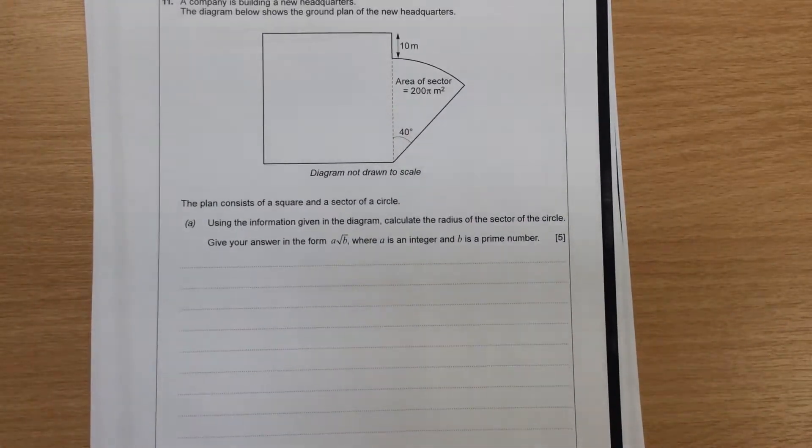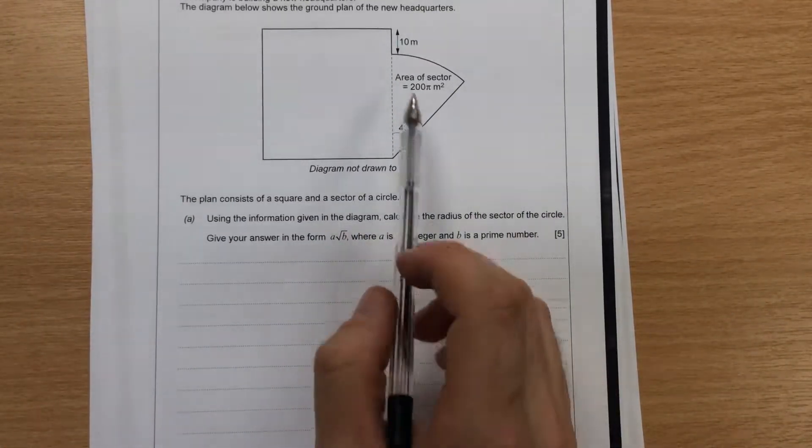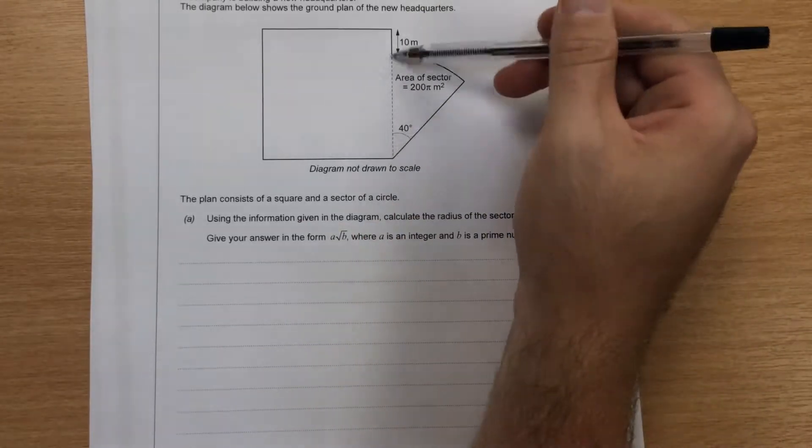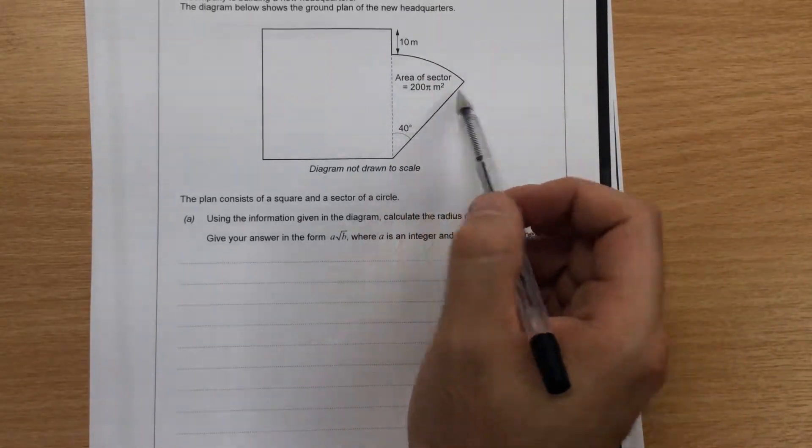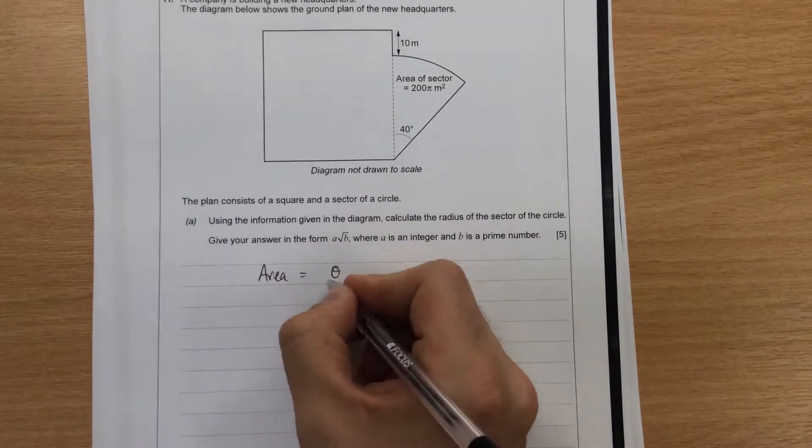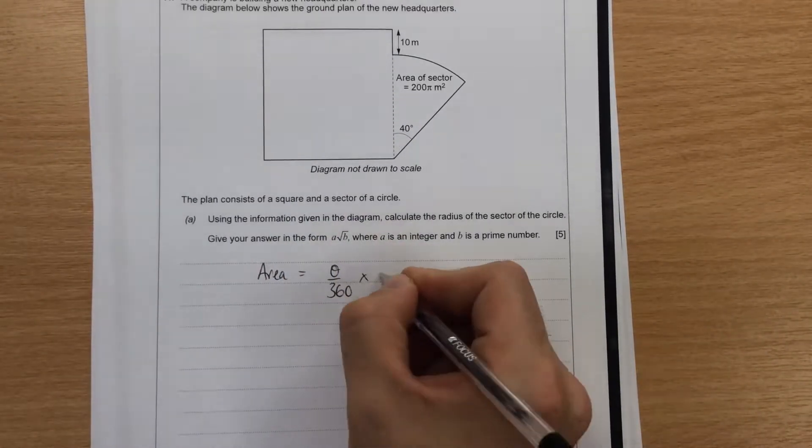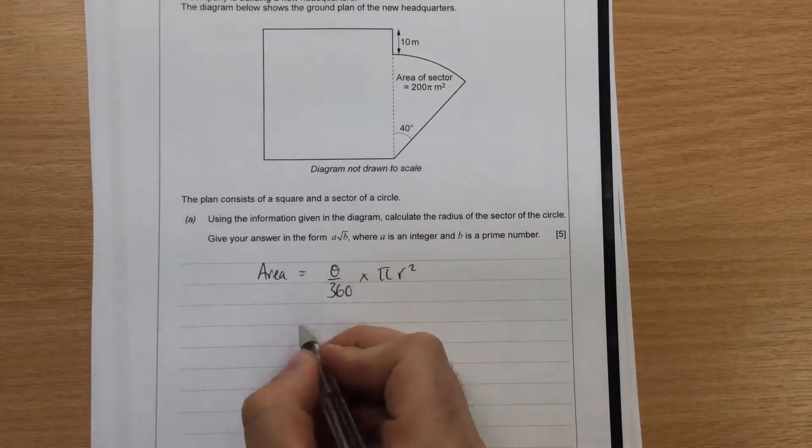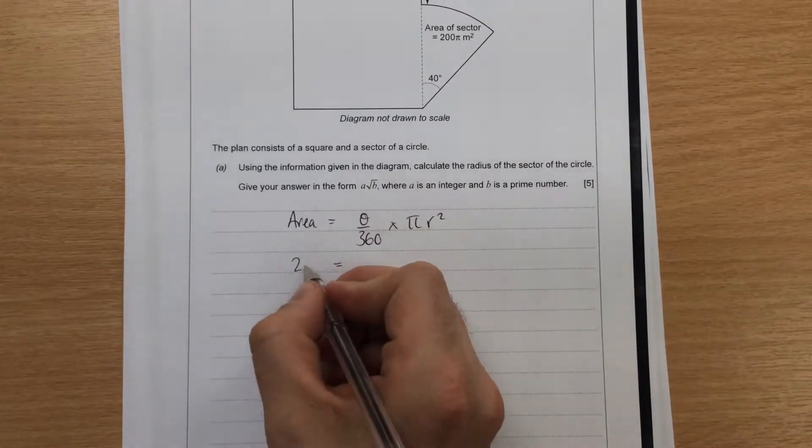Question number 11. Using the information, calculate the radius of the sector. So we need to find this height here. So the formula we're going to use when they tell us area is that the area of a sector is equal to theta divided by 360 times by pi r squared. So in this case, we know the area is 200 pi.